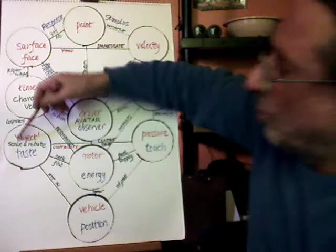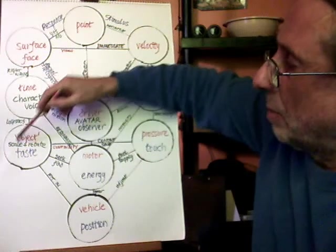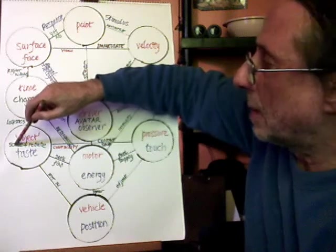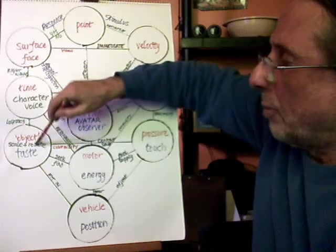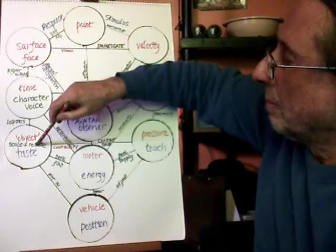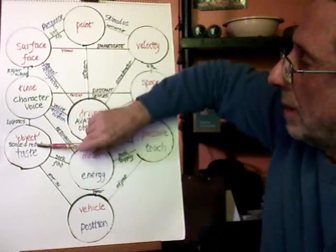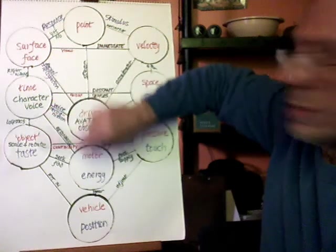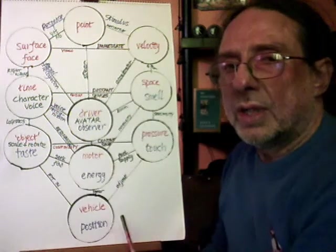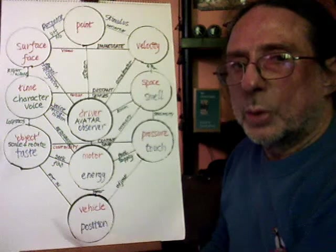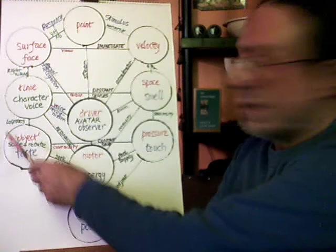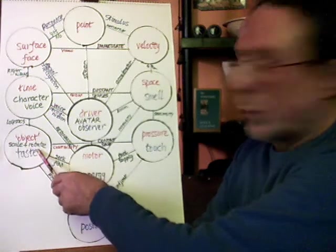53, 54. 53 is the object, the scale, being able to scale objects and count them. 54 is being able to rotate objects and name them. There's all these different functions connected in the 64 times 64 pathways. 53 is the object in scale counting, 54 is the object in rotation.